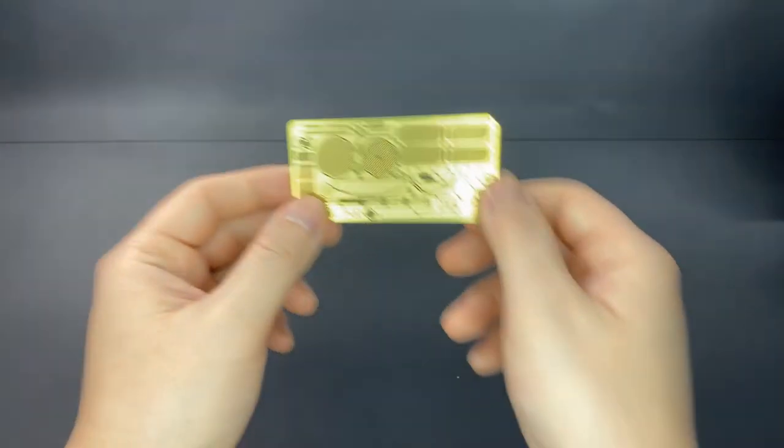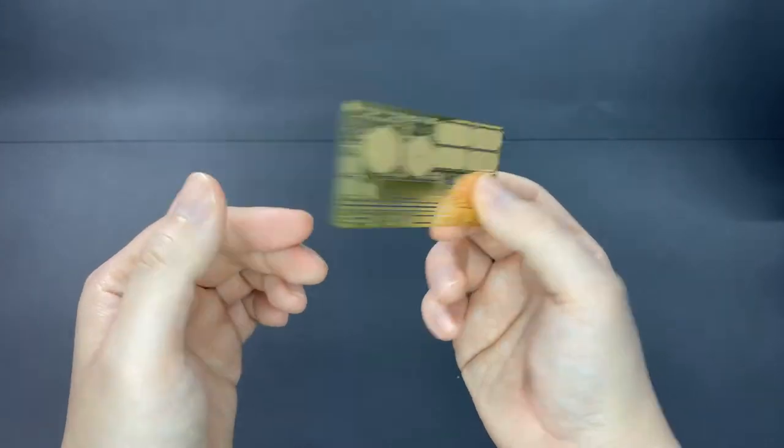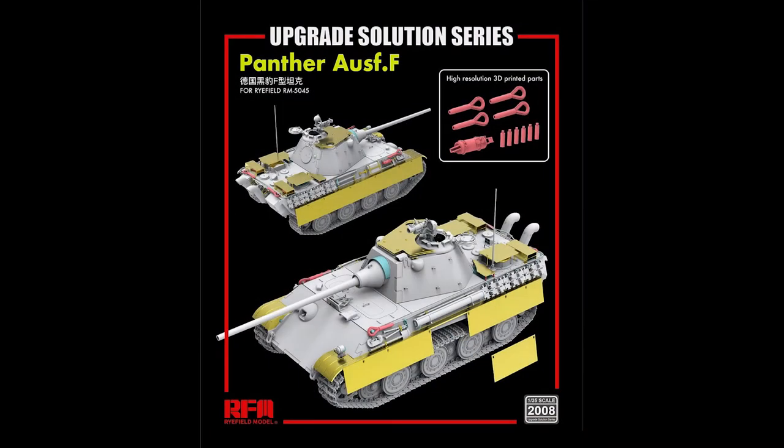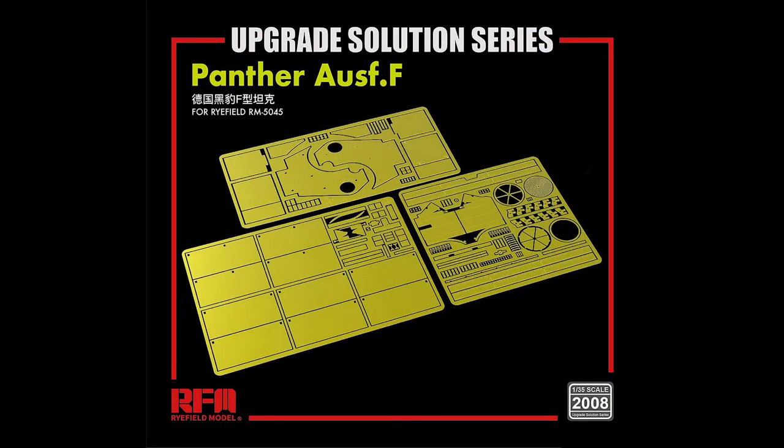Lastly, the photo etch parts for the vents and fasteners. There are optional parts with more photo etch that can be purchased separately. I think it's called the upgrade solution series. And I'm starting to regret not buying that. I could really use the photo etch for a lot of those side skirts and panels.